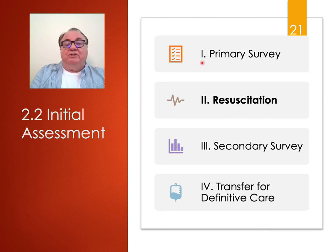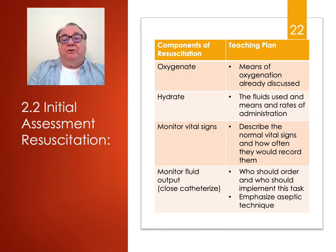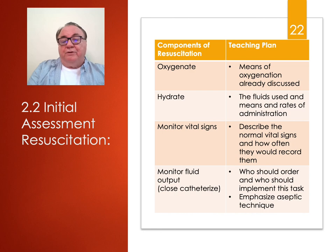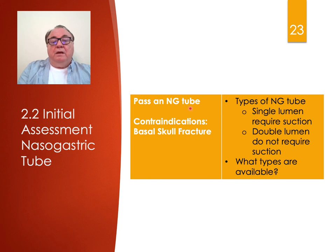That is the primary survey — the first part of the initial assessment. Simultaneously with the primary survey, you resuscitate the patient. You oxygenate, hydrate with fluids, monitor their vital signs and fluid output. A urinary catheter is a good way of monitoring output. Pass an NG tube to decompress their stomach — single lumen, double lumen, whatever is available.